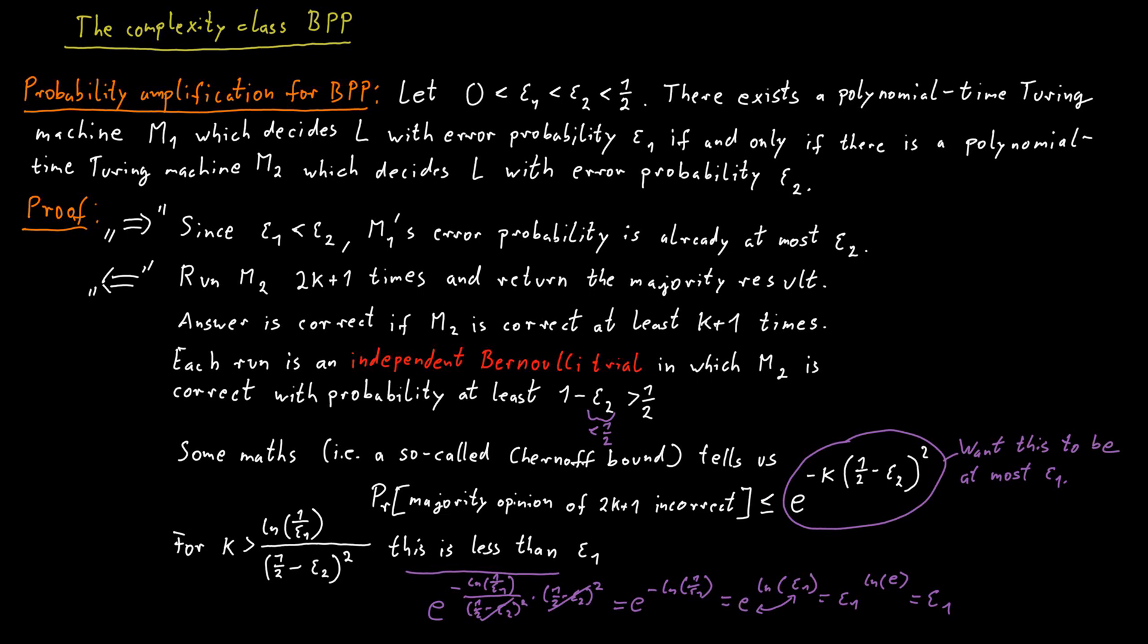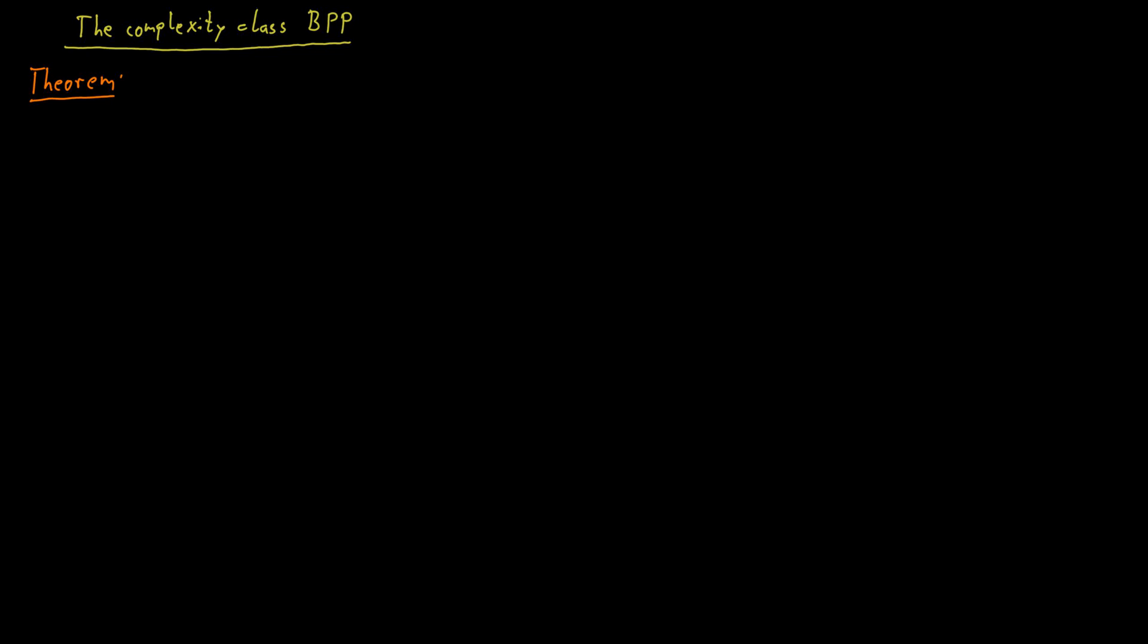The last thing we want to know about BPP is how it fits into the overall picture of all these other complexity classes. And hopefully it's fairly obvious to you that RP is contained in BPP. This is because allowing two-sided errors just kind of allows you to do more things than just allowing one-sided errors.